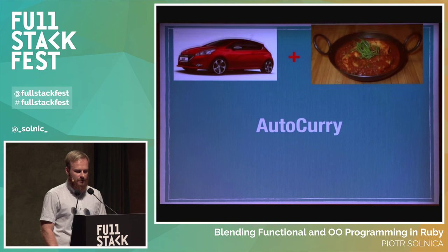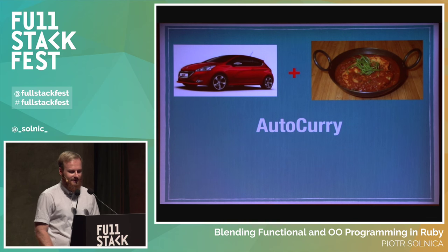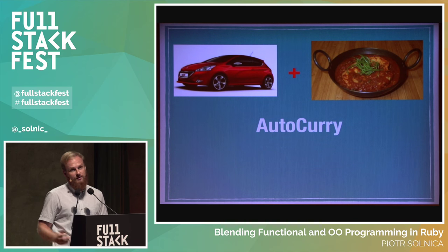If you want to compose more complicated functionality, you can use a couple of objects and just call them. It looks pretty much like calling functions. The downside is that Ruby doesn't have built-in interfaces for this kind of object composition, but we can implement our own. I'm going to talk about a couple of functional interfaces I implemented inside Ruby Object Mapper, which are now being extracted into separate gems.